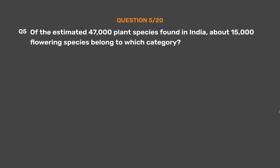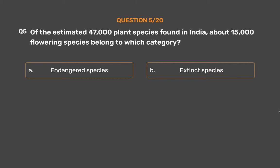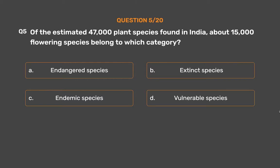Question number 5. Of the estimated 47,000 plant species found in India, about 15,000 flowering species belong to which category? Option A: Endangered species. Option B: Extinct species. Option C: Endemic species. Option D: Vulnerable species.